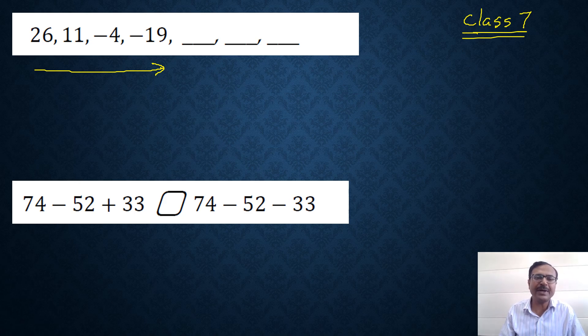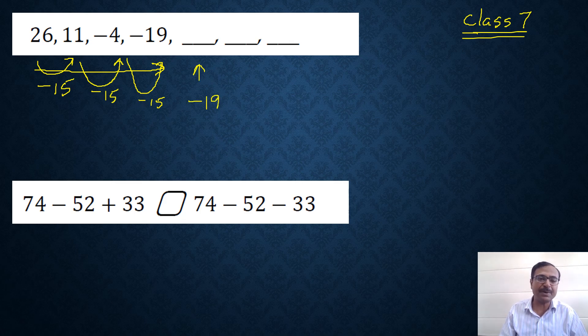We need to find the next 3 terms of this series. From 26 to 21 we have reduced the integer by 15. 11 to minus 4, again minus 15. Minus 4 to minus 19 is again minus 15. So what we need to do is take minus 19 and subtract 15 from that.